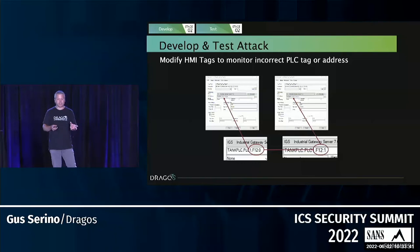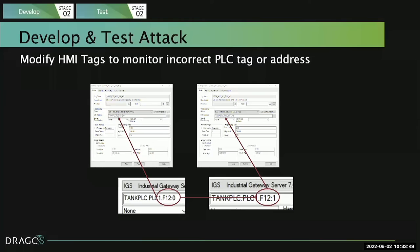The adversary is now developing their attack. Within the HMI database, each tag has a PLC IO address — for example, F12:0, a floating point value in a data table at word zero — which is where a pressure value lives in the PLC. It's trivial to change that address, so the HMI is no longer looking at the right memory location. When there are multiple teams of adversaries — one gaining access, another with ICS knowledge — it's feasible to figure out how many things to change to manipulate the process without it being observable to an operator.